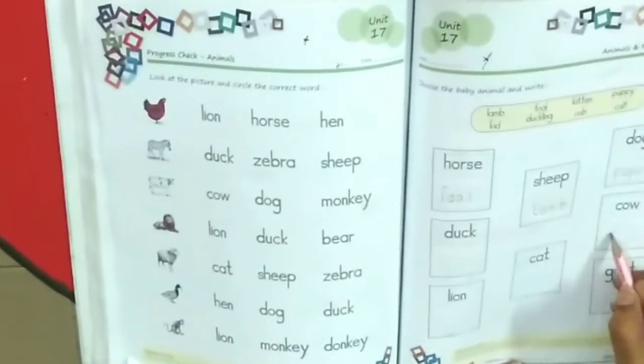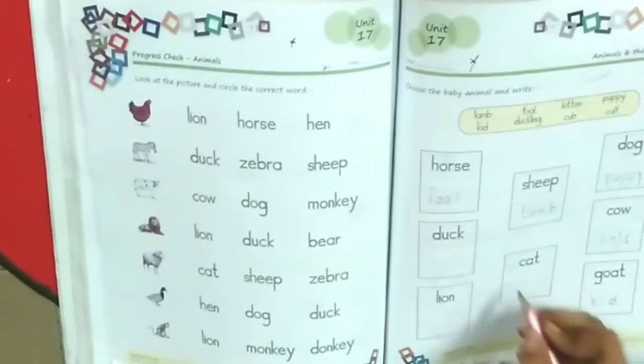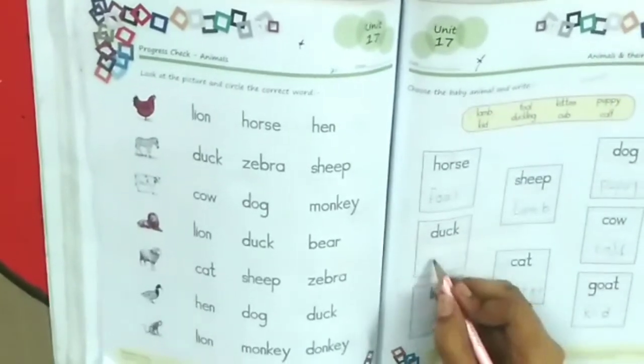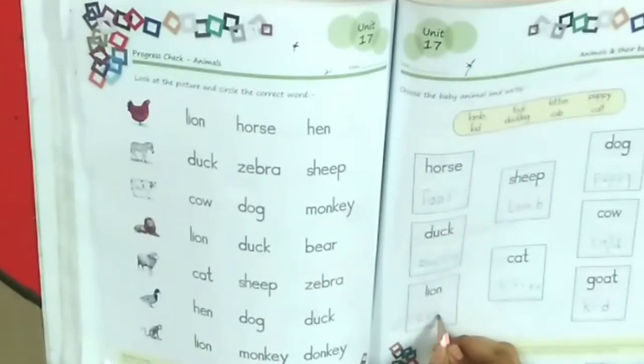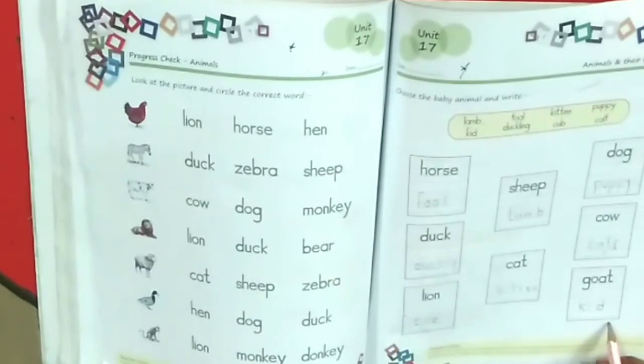Cow is a calf, goat is a kid, cat is a kitten, duck is a duckling. And the last is lion, the baby animal is cub. We have to write the baby animals and complete it.